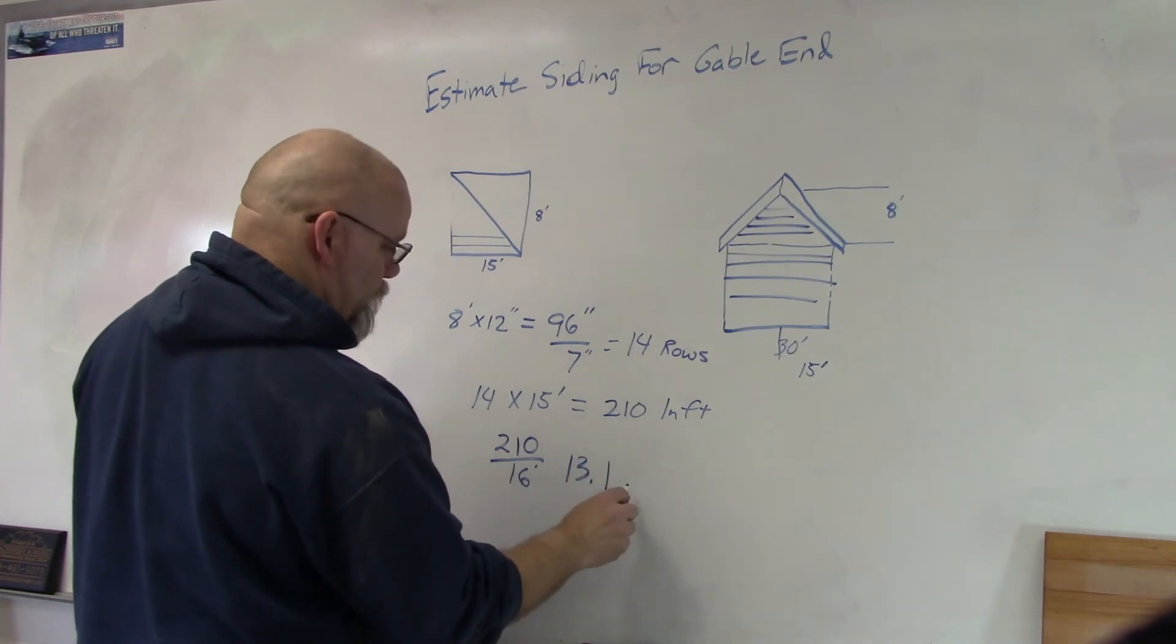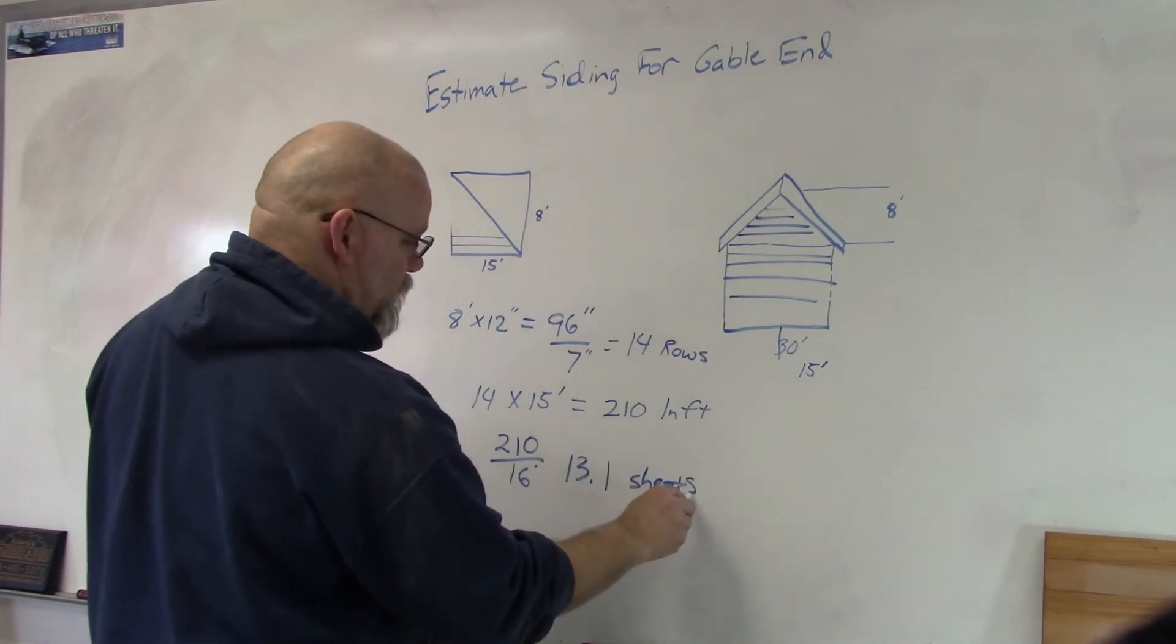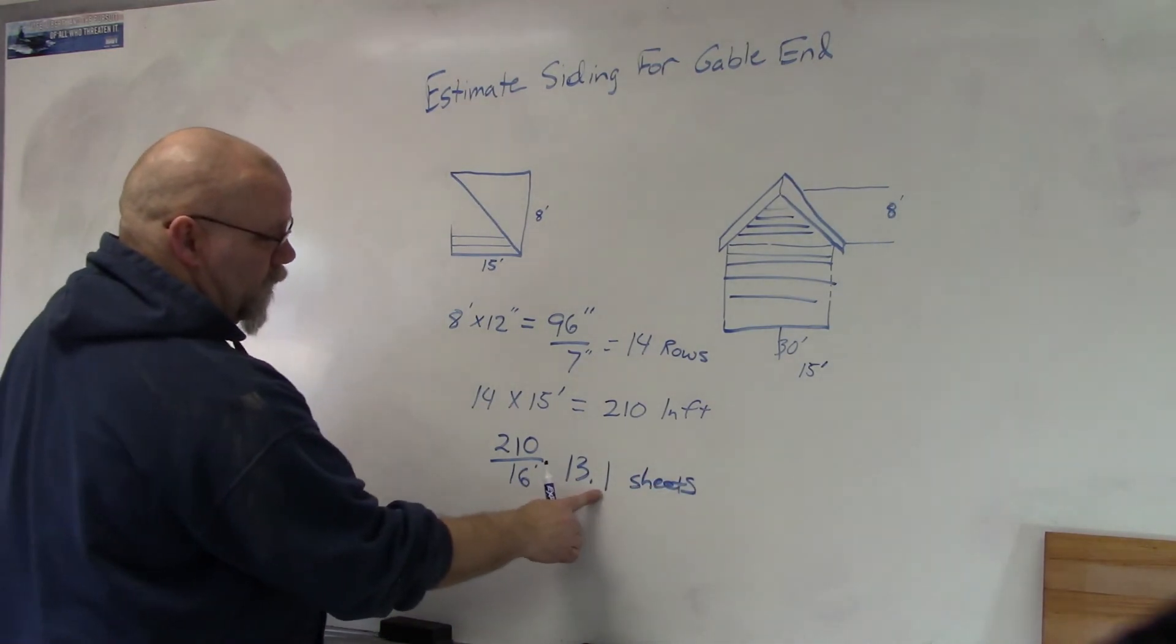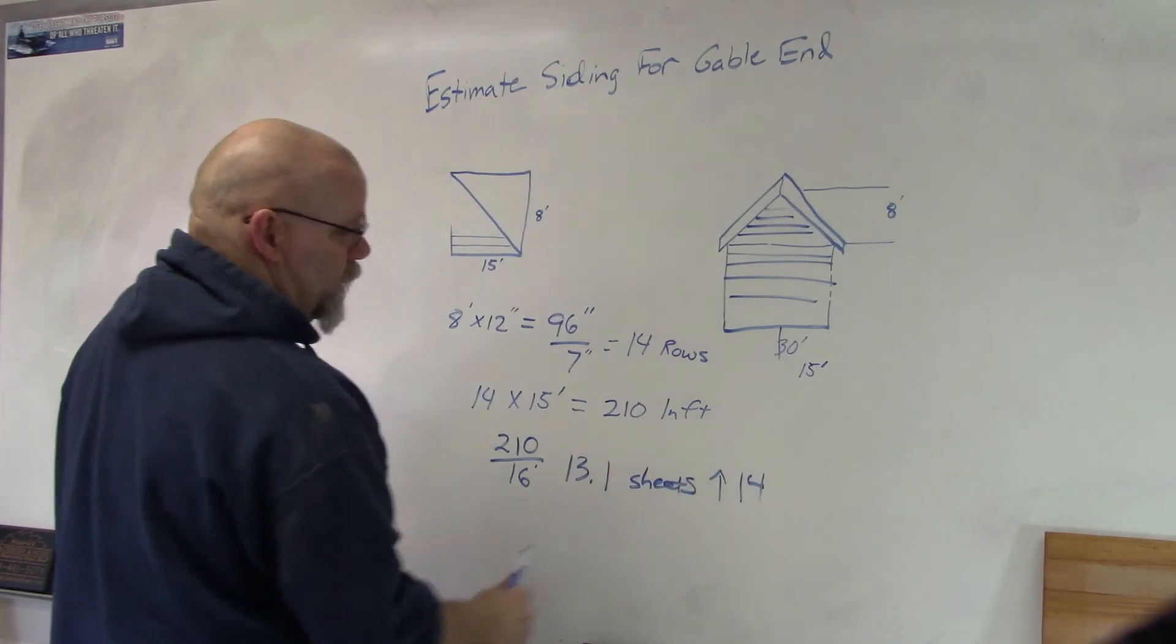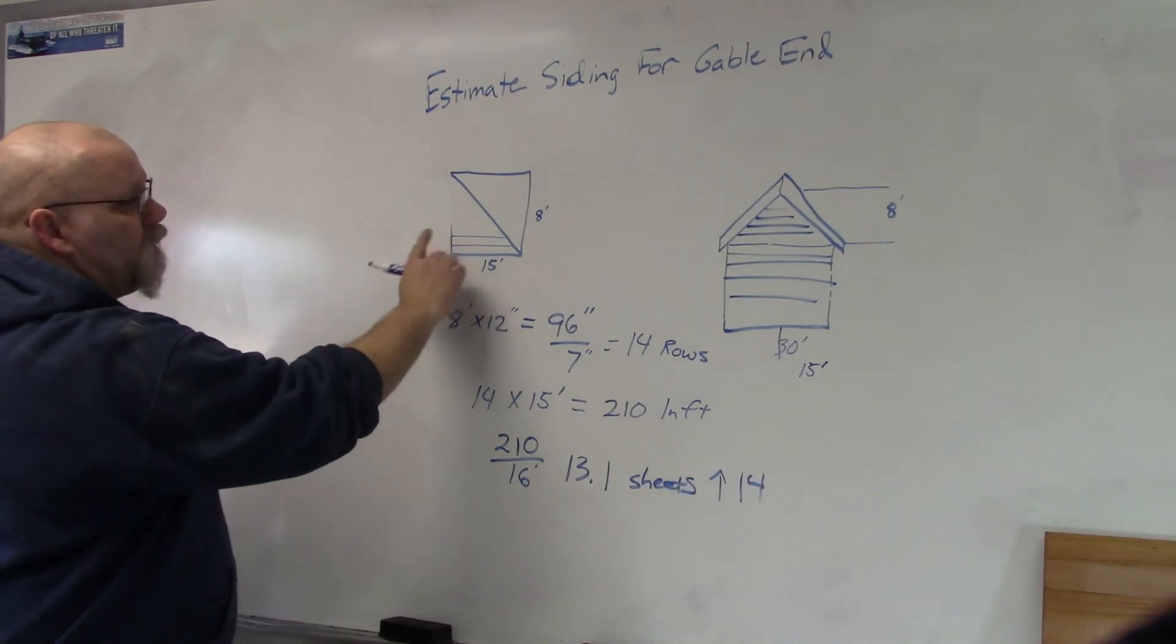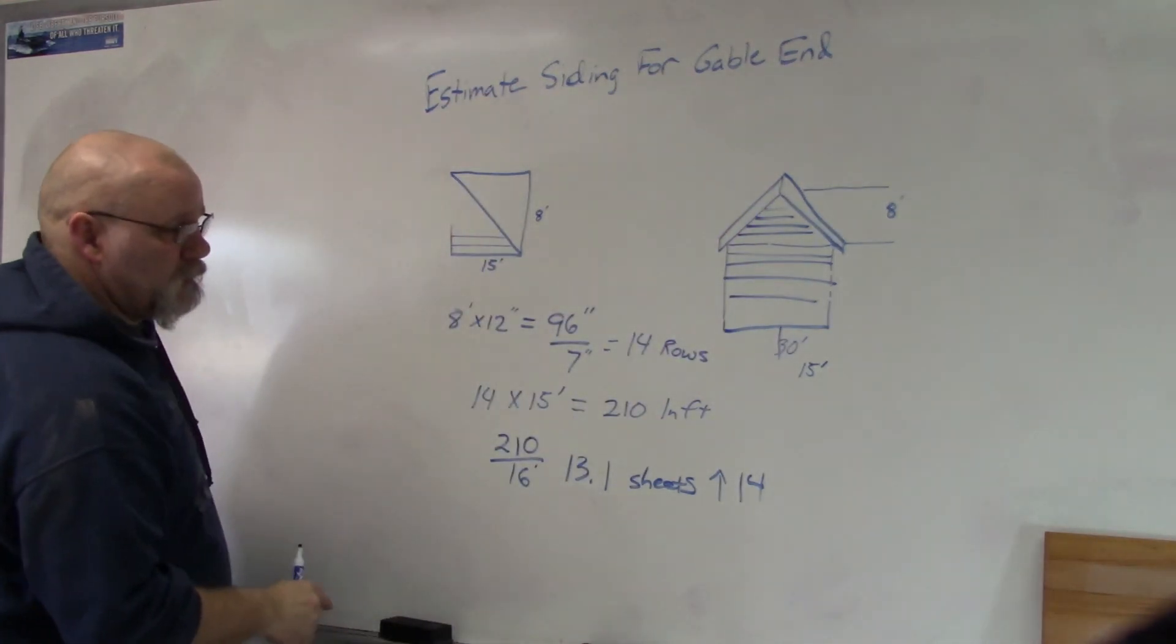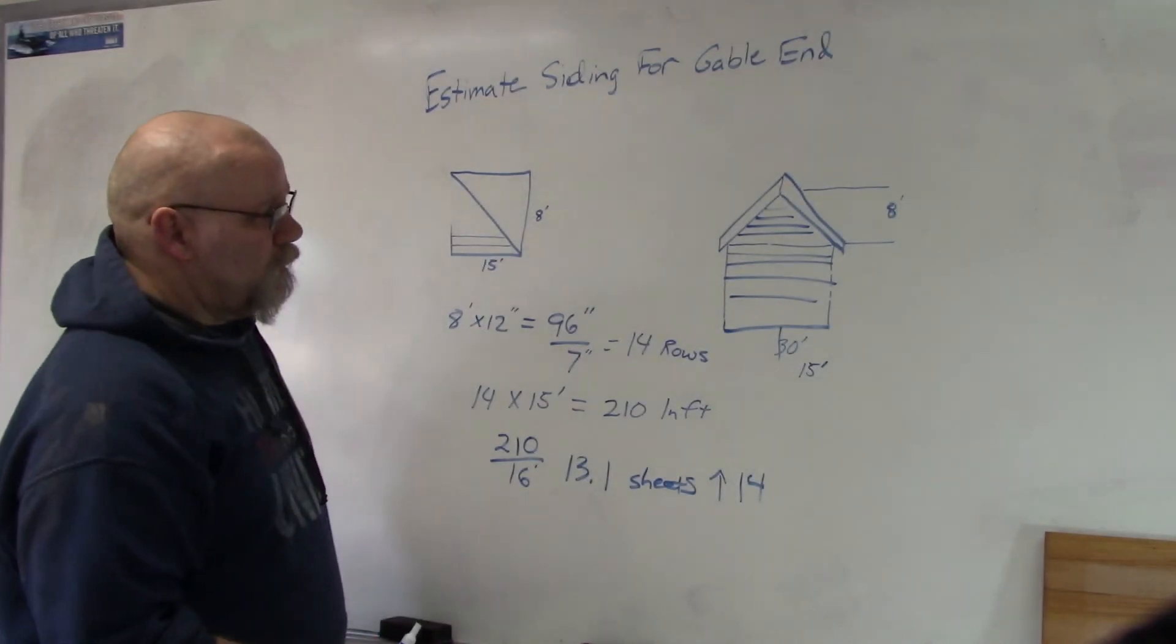Okay, so if you want a little extra you can round it up, round it up to say 14 pieces. So it would take 14 pieces of siding to do this gable end. Not too difficult.